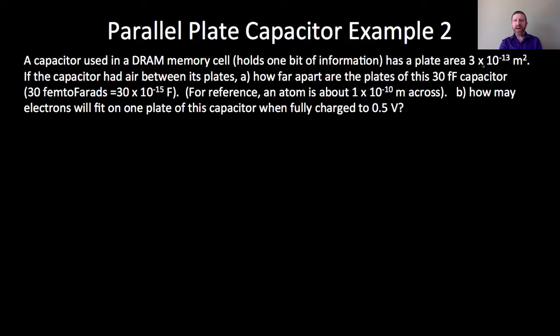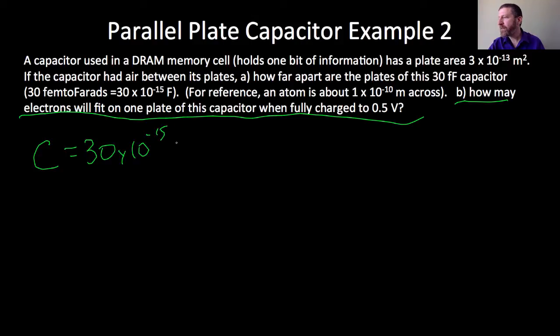Part B of this question is how many electrons will fit onto one plate of this capacitor when fully charged to 0.5 volts? And that's a typical voltage that you might have on one of these, like, between 0 and 1 volts. All we need is the capacitance is 30 times 10 to the negative 15 farads. And delta V is given as 0.5 volts.